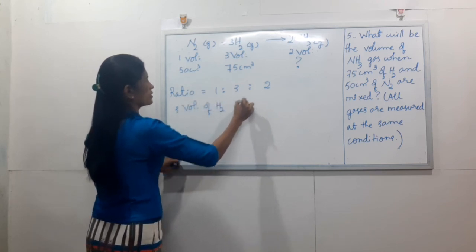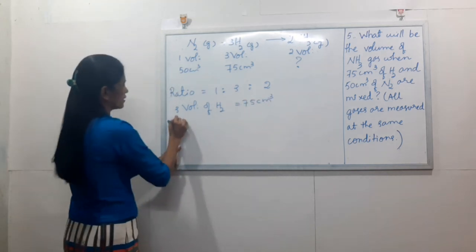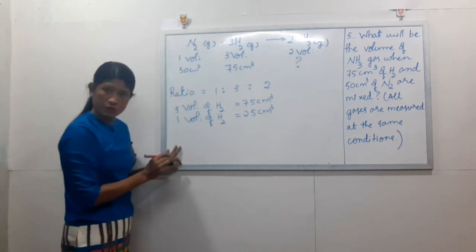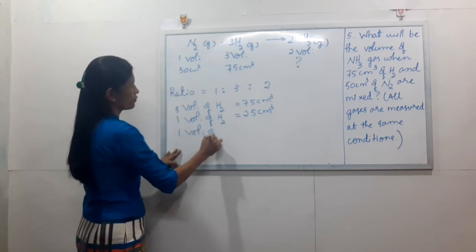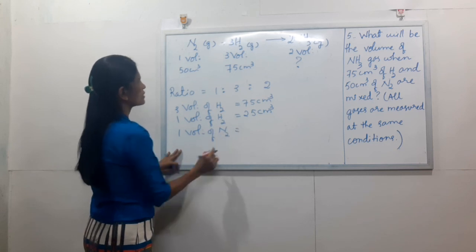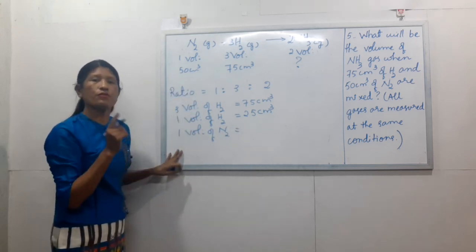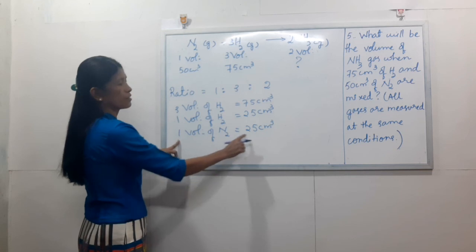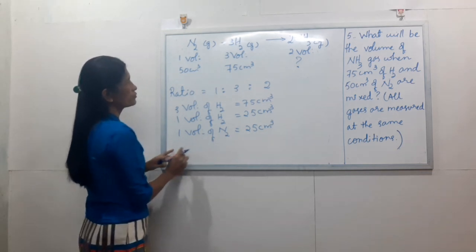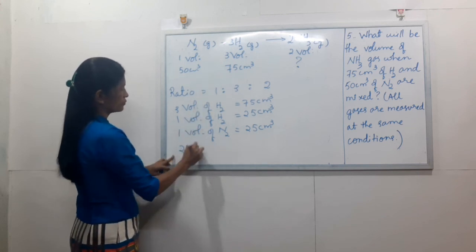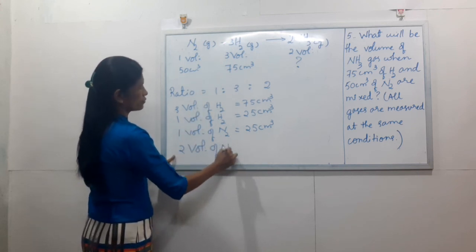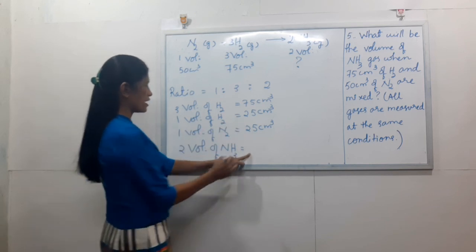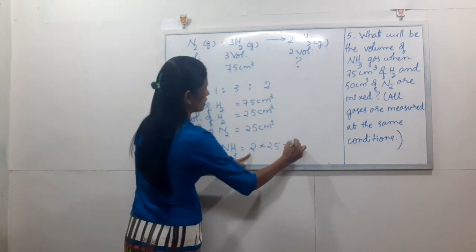H2 is the smaller solution, so we use H2 to define the limiting reagent — 25 cm³. Then we use nitrogen: 1 to 4 ratio. So we use nitrogen 1.5. The solution is 2 volumes of NH3 will be produced, added to 2.